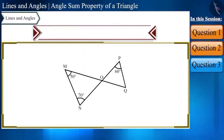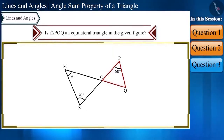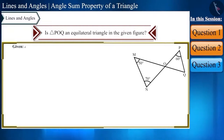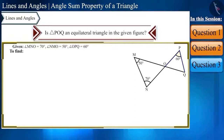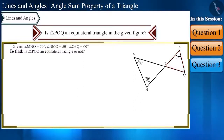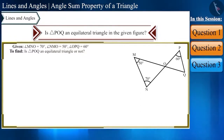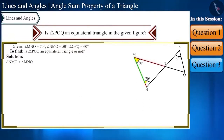Now let's move to the second question: identify whether triangle POQ in the given figure is an equilateral triangle or not. The given values are: angle MNO equals 70 degrees, angle NMO equals 50 degrees, and angle OPQ equals 60 degrees. To find out, we will calculate all angles of triangle POQ and check if each is 60 degrees. In triangle MNO, angle NMO plus angle MNO plus angle MON equals 180 degrees by the angle sum property.